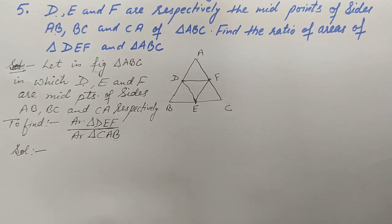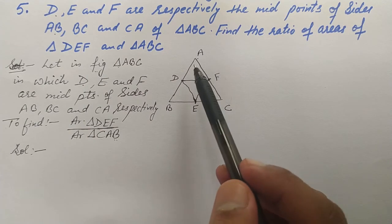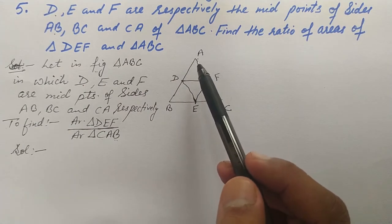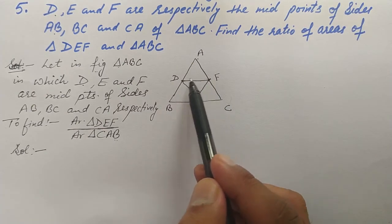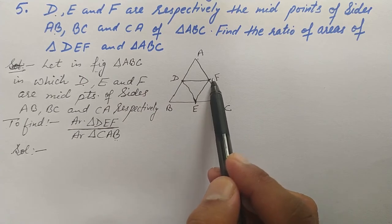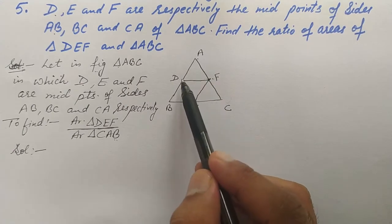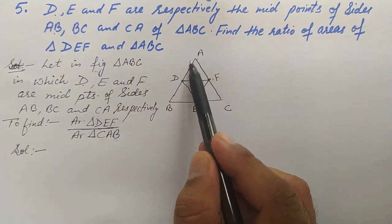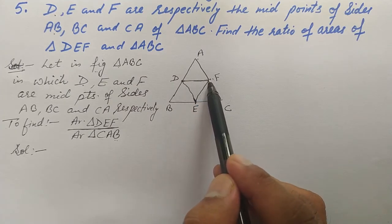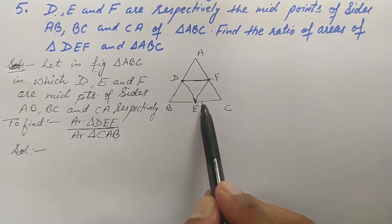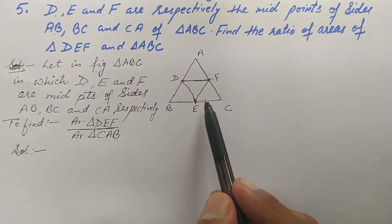We will use the Midpoint Theorem here. The Midpoint Theorem states that the line segment joining the midpoints of two sides of a triangle is parallel to the third side and half of it. In triangle ABC, D and F are midpoints of AB and AC, so DF is parallel to BC and DF equals half of BC.